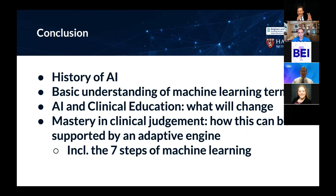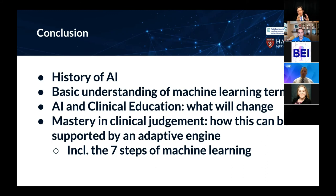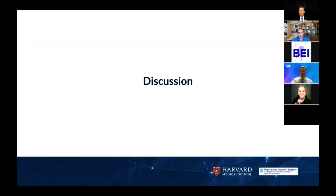Thanks, Igal — that was a tour de force. Today we've tried to cover the history of AI to inform a basic understanding of AI and machine learning terms, discussed what the literature says about changes coming in AI and clinical education, and walked through a grounding based on Igal's work at HarvardX and elsewhere on how to think about applying machine learning to assessment and learning of mastery and clinical judgment. We have other slides, but I want to make sure we have a chance for discussion and questions. We'd certainly welcome any feedback afterwards. This is a series, so perhaps we won't answer all questions today, but we'll continue to explore them as we go through.